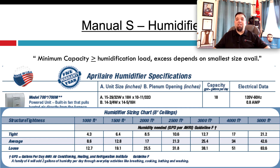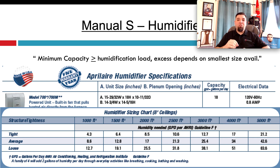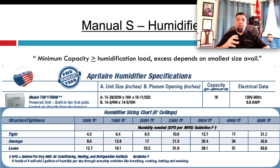This particular powered humidifier gives 18 gallons per day on the chart, which would apply. Your minimum capacity is what you need to meet, or within reason. Unless you actually measure the leakage of the house, that's an educated guess on the conservative side — you probably don't need as much humidity as you think.